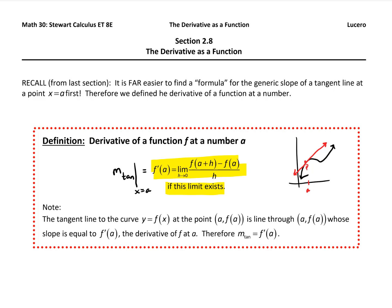In the last section, we did this for specific values of a — when a equals 2, negative 3, or 0 — running the limit to find the numeric value of the slope of the tangent. But at the end of that section, we said it would be far easier if we could just find a formula, f prime of a, for a generic a.